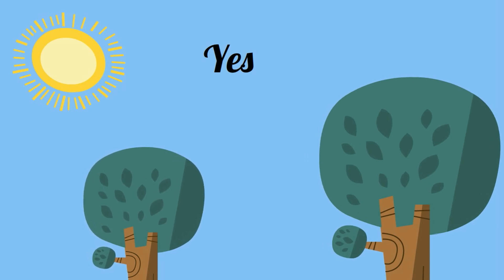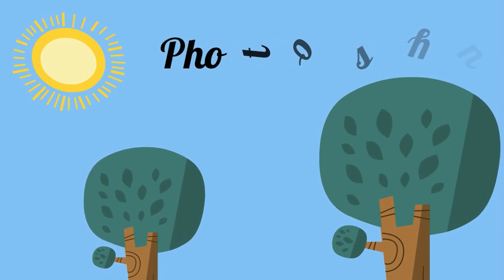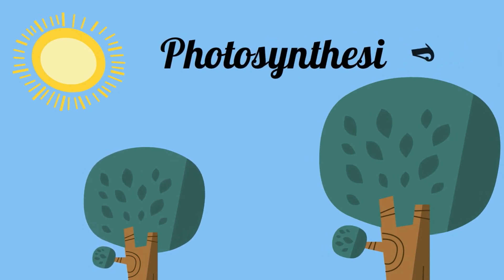Plants get their food in a process called photosynthesis. In order for photosynthesis to take place, a plant needs three things.